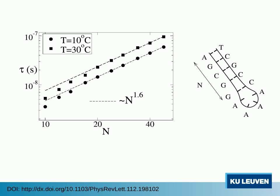Using computer simulations of a coarse-grained model of DNA, we find instead that the zippering time scales super-linearly. Here in this graph, one can see a plot of the zippering time tau as a function of the hairpin length n, as determined from simulations at two different temperatures.